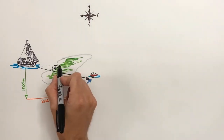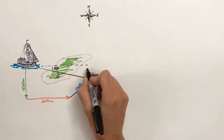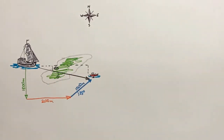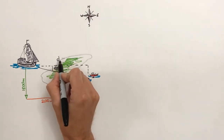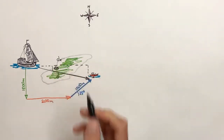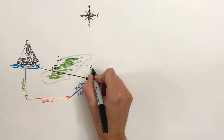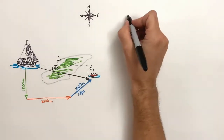That resultant displacement can be broken up into horizontal and vertical components. So to add these three vectors together, we're going to look at the sum of all displacements in the x-axis, and we're going to look at the sum of all displacements in the y-axis as well.